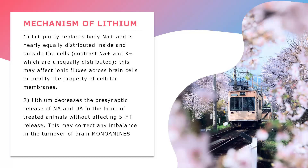The first mechanism: lithium partly replaces the sodium ion and is nearly equally distributed inside and outside the cell. In the case of sodium and potassium ions, they are unequally distributed. But when lithium is given to the patient, it gets equally distributed inside and outside the cell, so depolarization is hampered. This means the hyperactive neuron activity is decreased to normal, and the hyperactive mood is normalized.